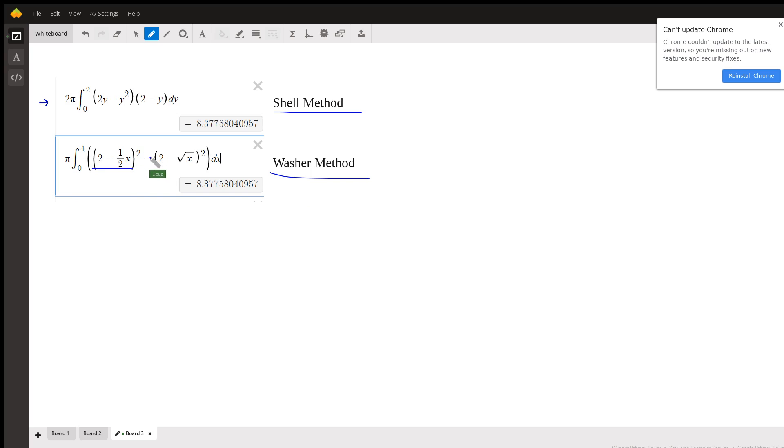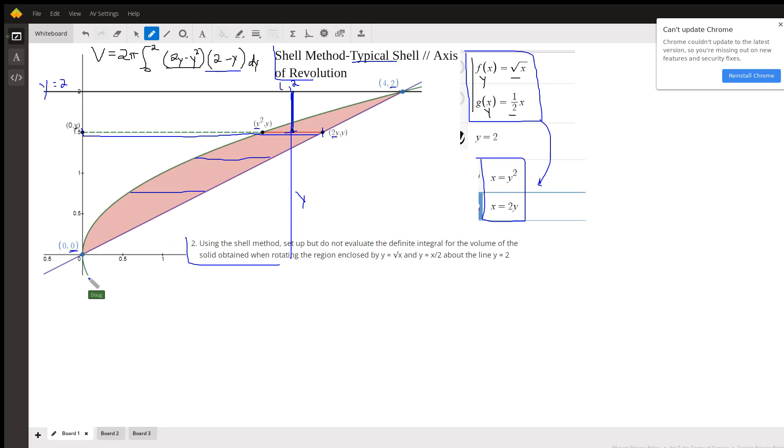x squared minus the inner radius squared gives us the same answer. In some cases, one method is much easier than the other method. In this case, man, they're both about the same.